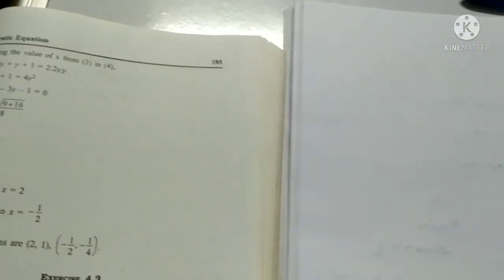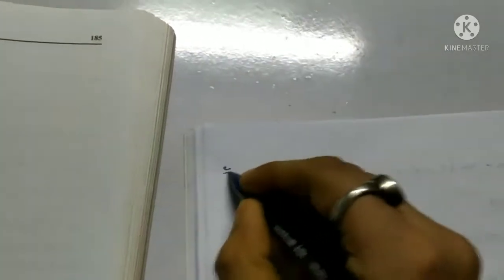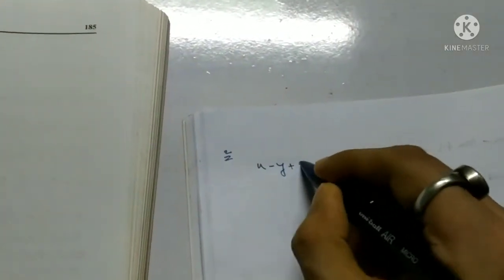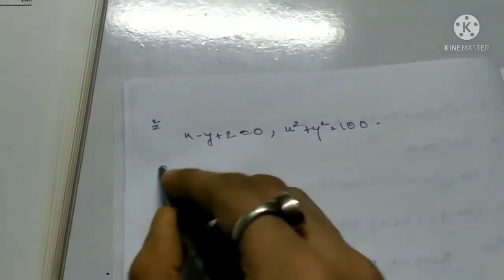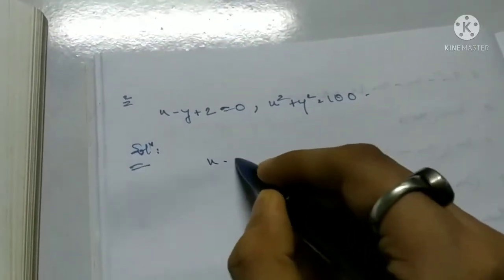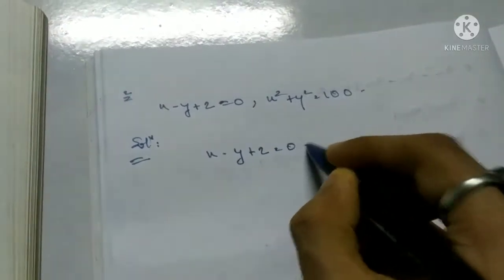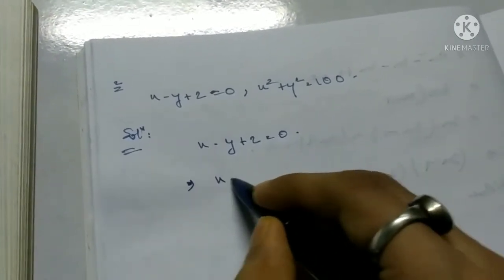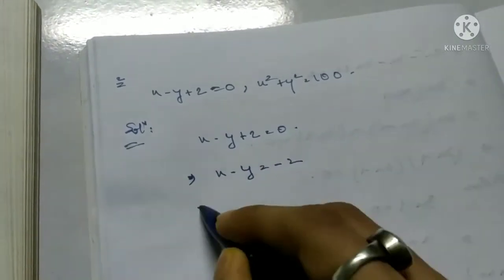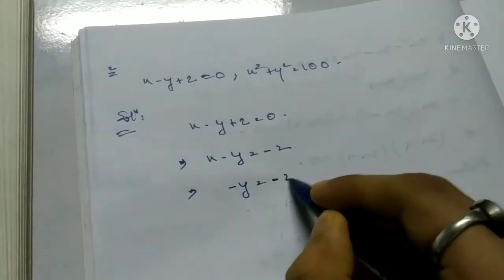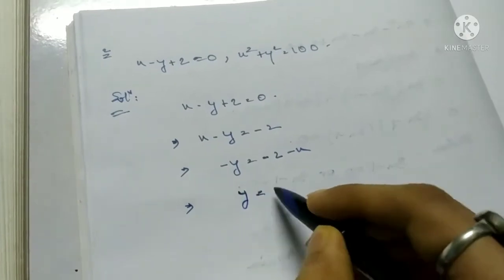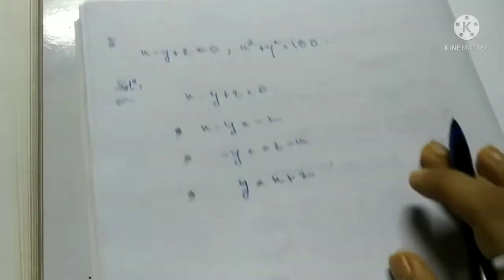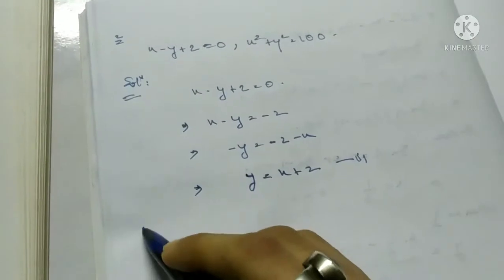Question number 2: x minus y plus 2 equals 0 and x squared plus y squared equals 100. From the first equation: x minus y equals minus 2, so y equals x plus 2. This is equation 1.